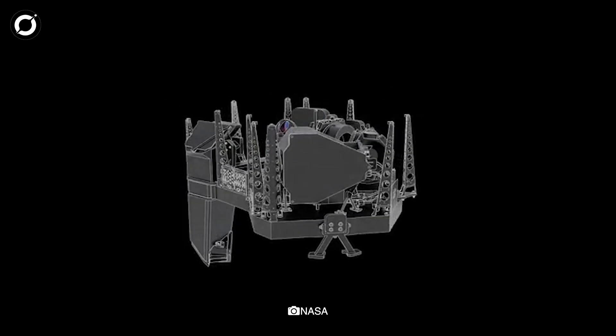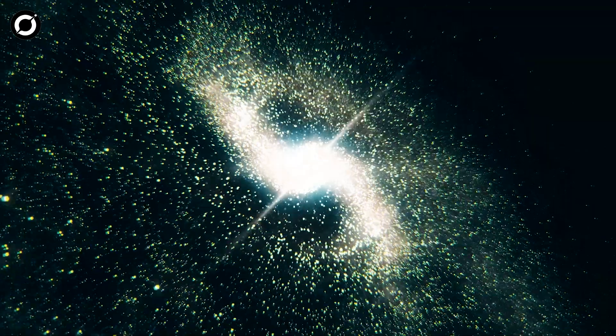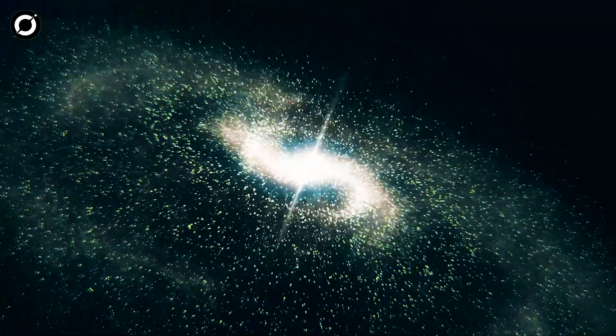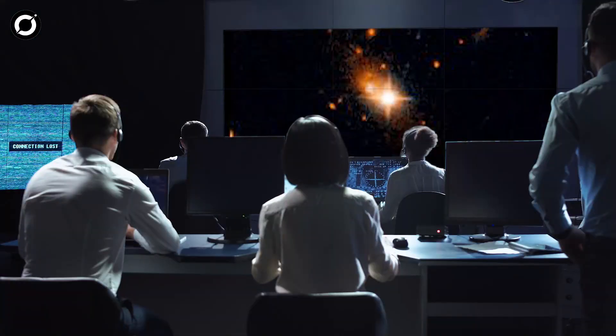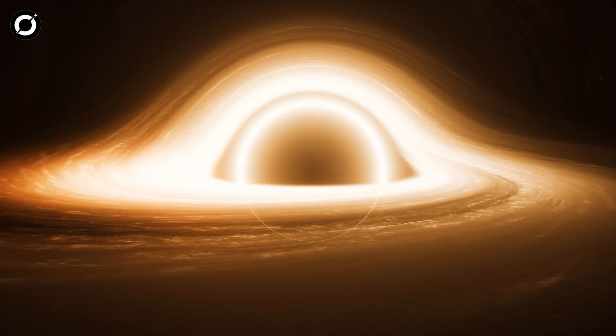Webb's NIRSpec instrument will measure how quickly the galaxy's innermost stars orbit the galaxy's center. That information will in turn help astrophysicists calculate the mass of the black hole, because the faster the stars orbit, the more massive the black hole is.